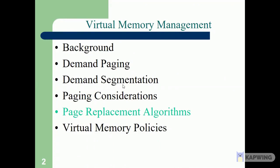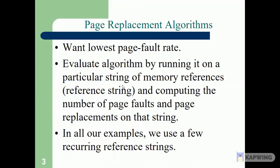Now we will go through the page replacement algorithms. What is a page replacement algorithm? We want the lowest page fault rate. When you want to access any program, it is stored on secondary memory. We bring it to primary memory, where resources and the processor are allocated and it executes. The job is stored in the form of pages. Since we cannot bring all pages into primary memory, page faults should be less and CPU utilization should be more.